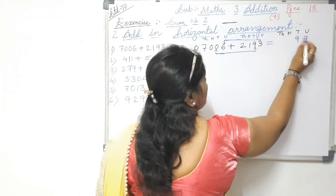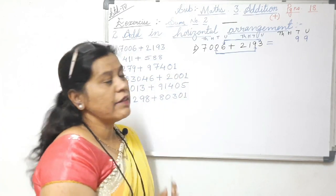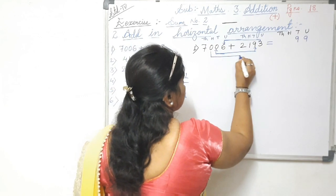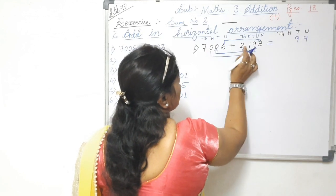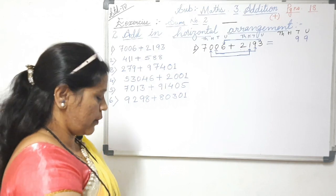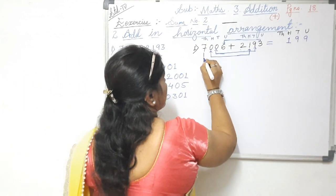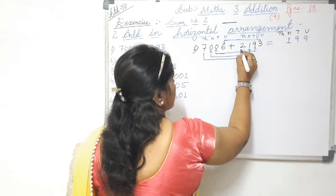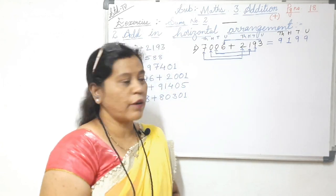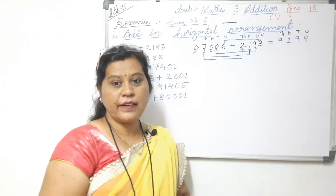Hundreds plus hundreds: zero plus one is one. Thousands plus thousands: seven plus two is nine. So the total of seven thousand and six plus two thousand one hundred and ninety-three equals nine thousand one hundred and ninety-nine.